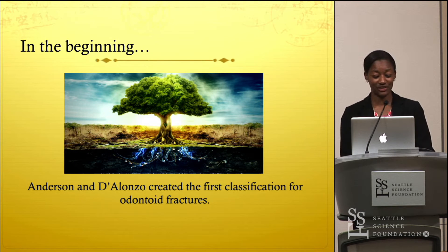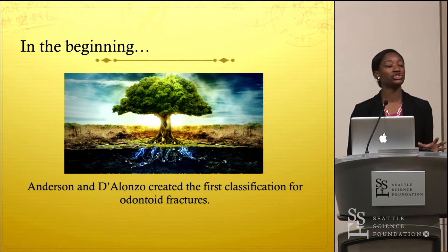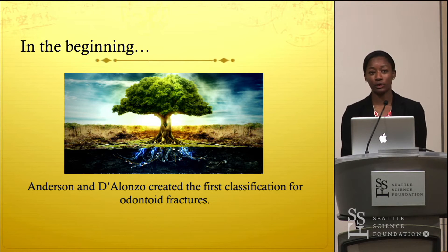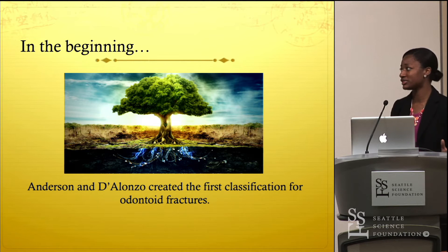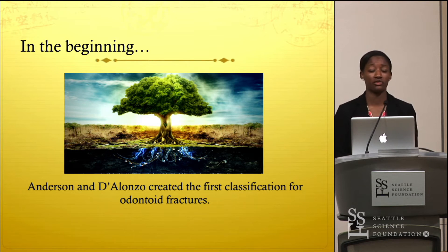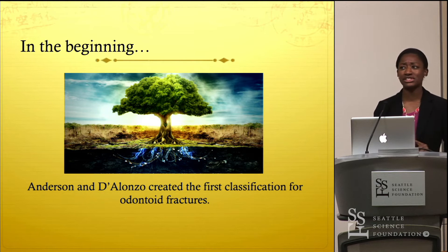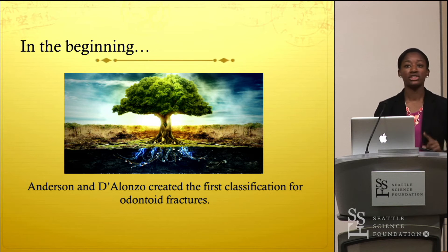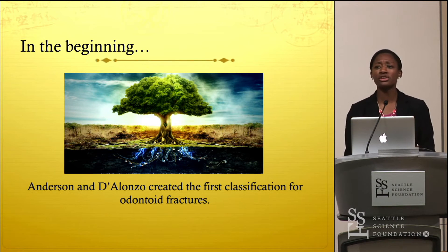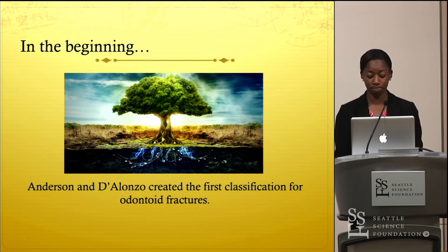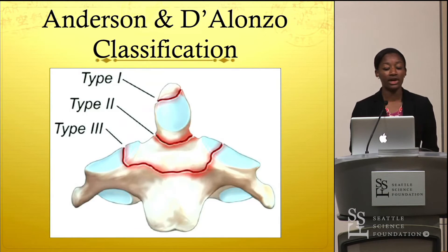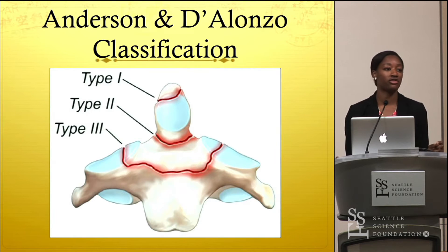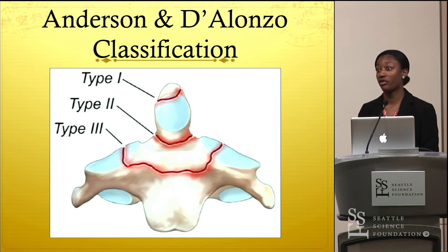Anderson and D'Alonzo created the first classification for odontoid fractures. Picture yourself in 1974: Lewis Anderson and Richard D'Alonzo combed through data from the past 12 years and found 60 patients who had fractures of the odontoid process, specifically in a hospital in Memphis. They developed a system to organize these fractures, and their classification was very specific — they depicted that the prognosis of a patient could be related to the anatomical location of the fracture line.